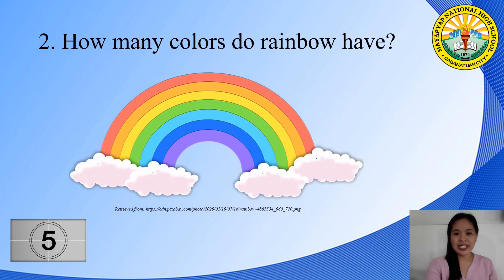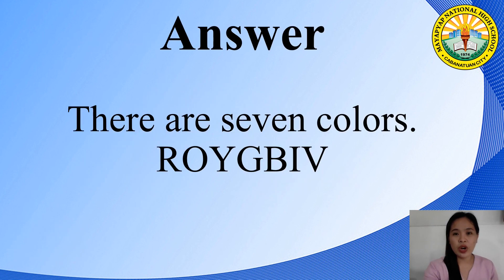The next question is: how many colors does a rainbow have? There are 7 colors — red, orange, yellow, green, blue, indigo, and violet.